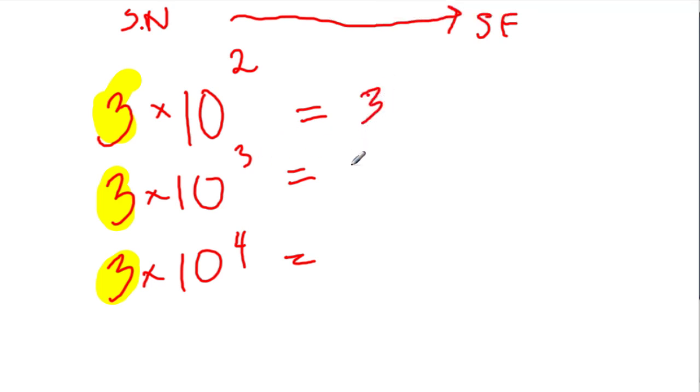Now once you write down the coefficient in each of them, we could think about expanding the 10 to the second or 10 to the third to help figure out what these things mean.